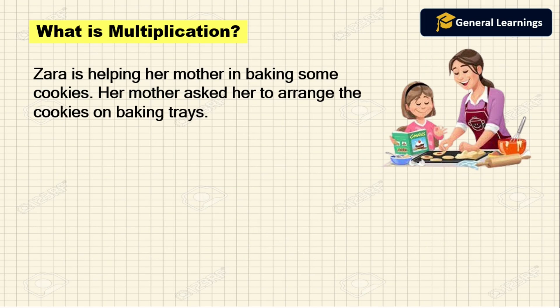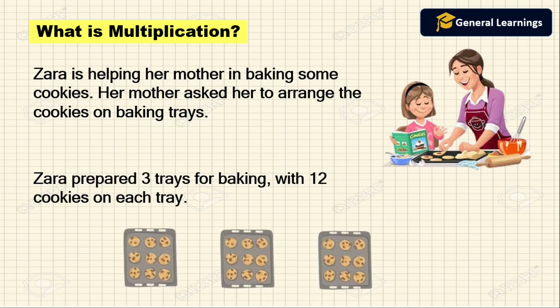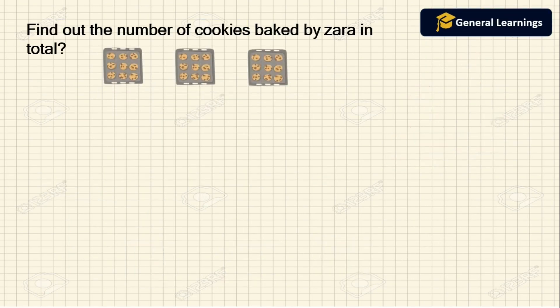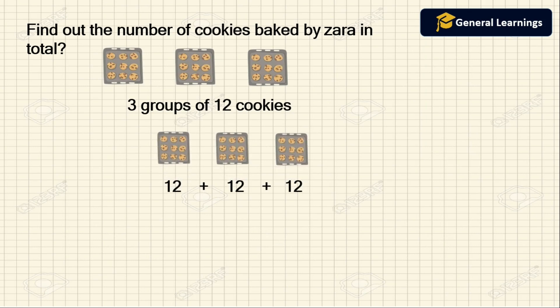Her mother asked her to arrange the cookies on a baking tray. Zara prepared three trays for baking with 12 cookies on each tray. To find the total number of cookies baked by Zara, we know that each tray contains 12 cookies across three trays — that is three groups of 12. This can be written as 12 plus 12 plus 12, which gives us 36.